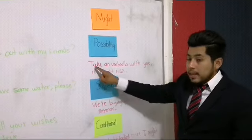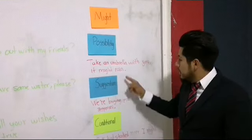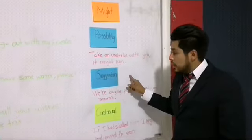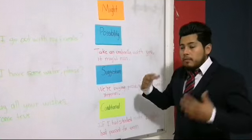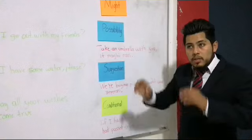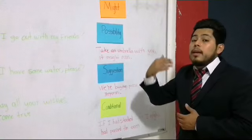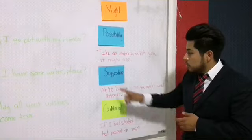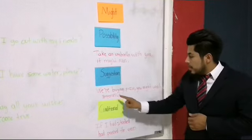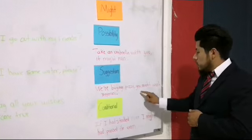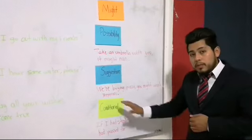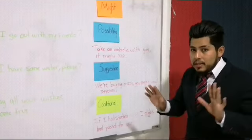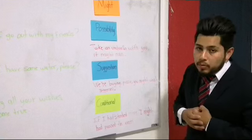Possibility: Take an umbrella with you. It might rain today. We use might for possibility. Suggestion: We're buying pizza — you might want pepperoni. I'm going to buy a pizza and you might want a pizza of pepperoni.